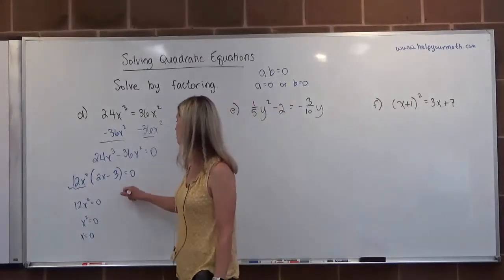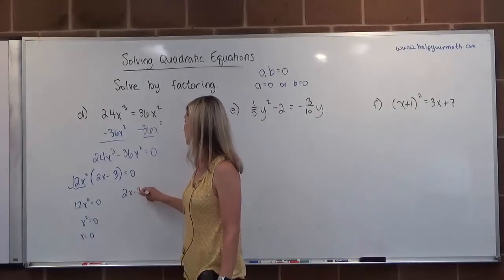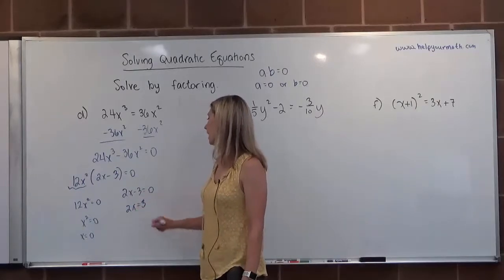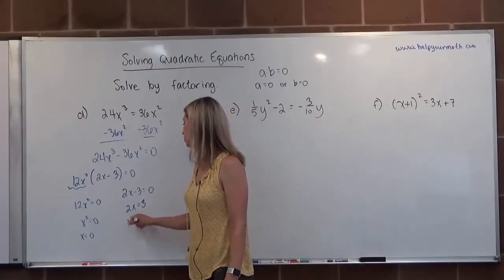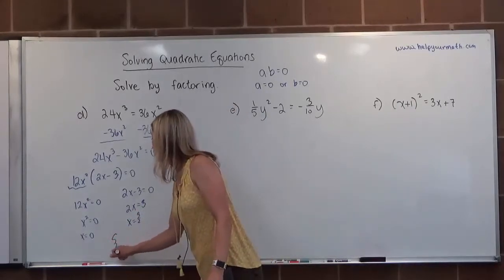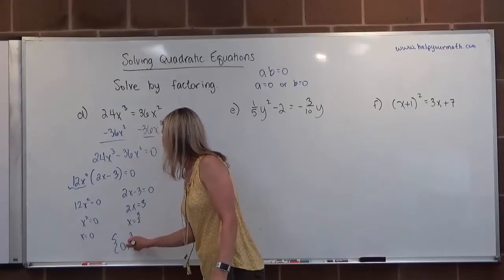The other solution is when 2x minus 3 is equal to zero. Now we're going to get x by itself so I'll add 3 to both sides, divide both sides by 2 and we get 3 over 2. So here we have two solutions, zero and 3 over 2.